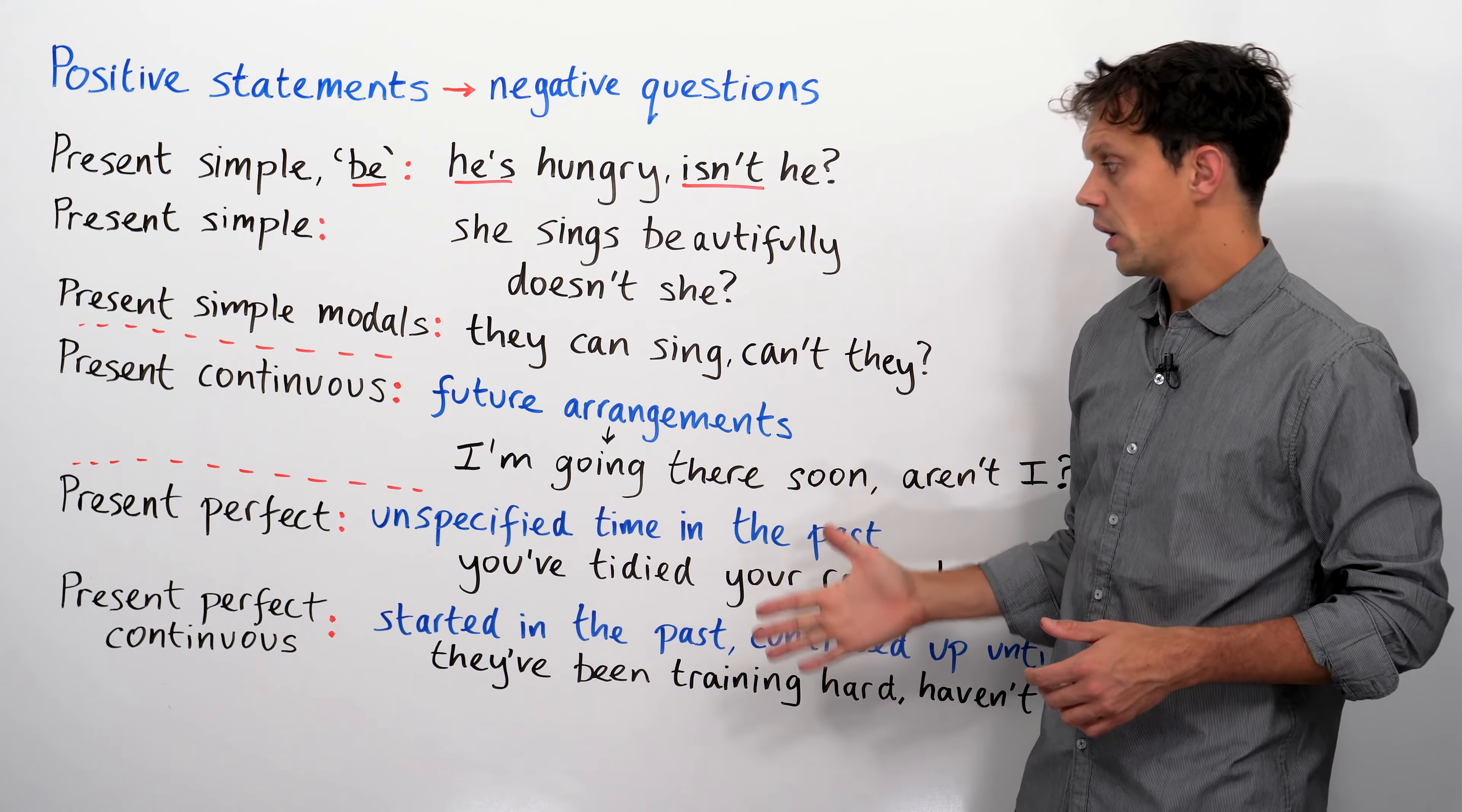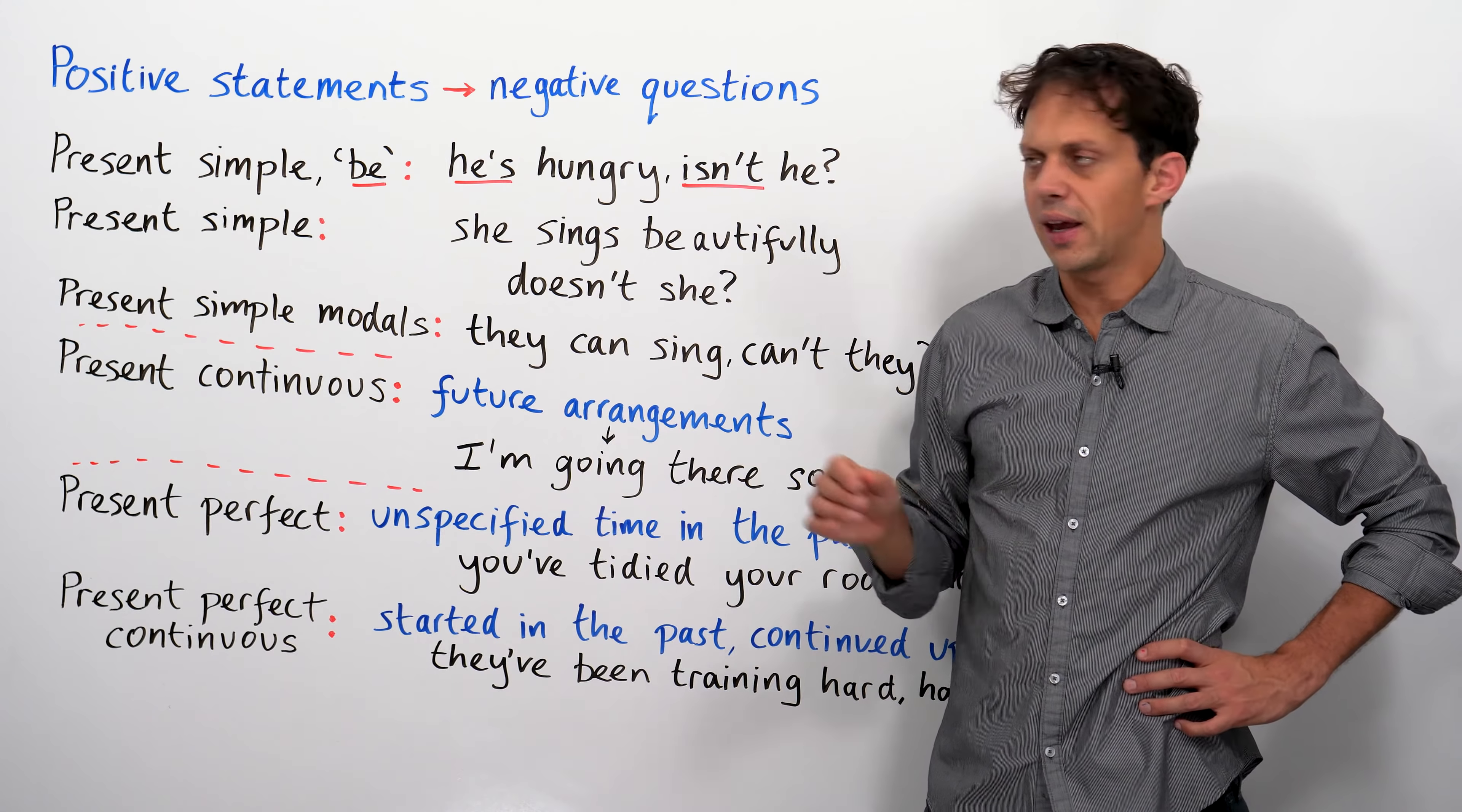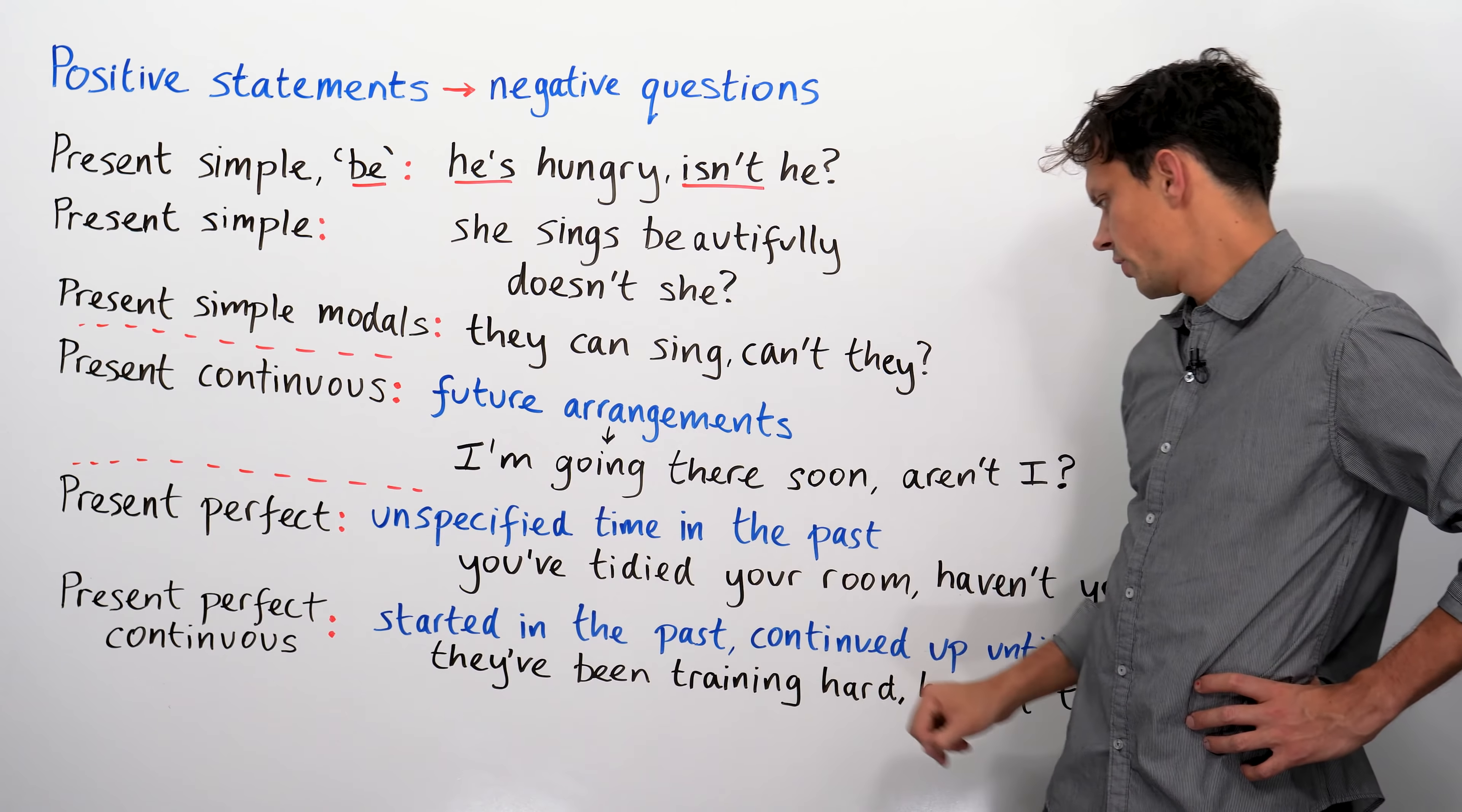And I have got a separate video coming out on the difference between the present perfect and the past simple. So, if you're not sure about it, do have a look at that video. And if there's any tenses where I'm going through and you haven't quite understood how or what that tense is, then do go to the engVid website and there will be a video for each of these tenses. I'm just giving an overview. So, the present perfect is an unspecified time in the past.